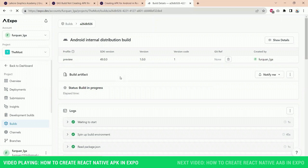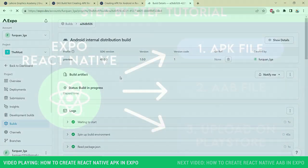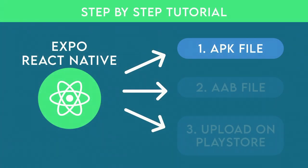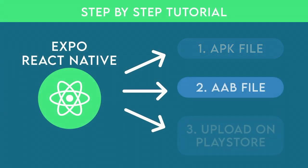That's it — that's how easy it is to download an APK from the Expo dashboard. In the next video we are going to continue from here and see how to create an AAB file and upload it to the Play Store. See you in the next video.